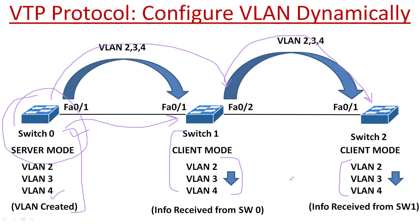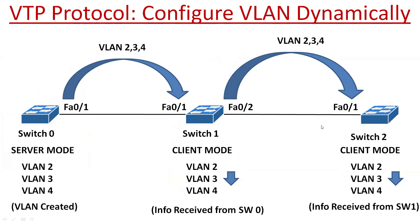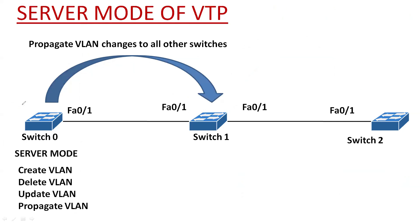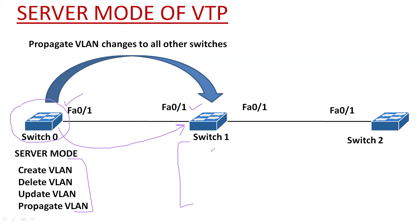We don't need to create VLAN information on all the switches manually. By the help of VTP protocol, we can easily do the same. If switch 0 is in server mode, it can create, delete, update, and rename VLAN information. After creating any VLAN, that information will be automatically forwarded to the next switch. If you are in client mode or server mode, you can copy and paste the same database, and the switches will update their database.